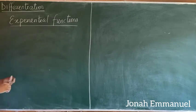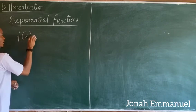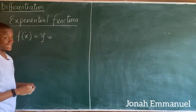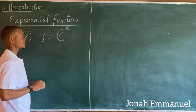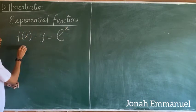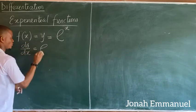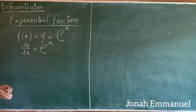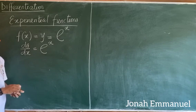From exponential functions, if we are given a function f(x) equal to y expressed as an exponential function — say e to the x — we will have that dy/dx is equal to e to the x. So if you differentiate e^x, you get e^x.